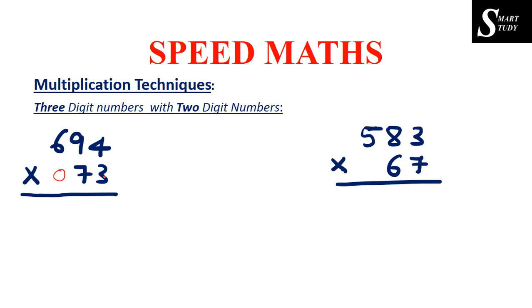The first step is 4 into 3. 4 into 3 is 12. So 2 goes in the answer and 1 gets carried forward for the next place.